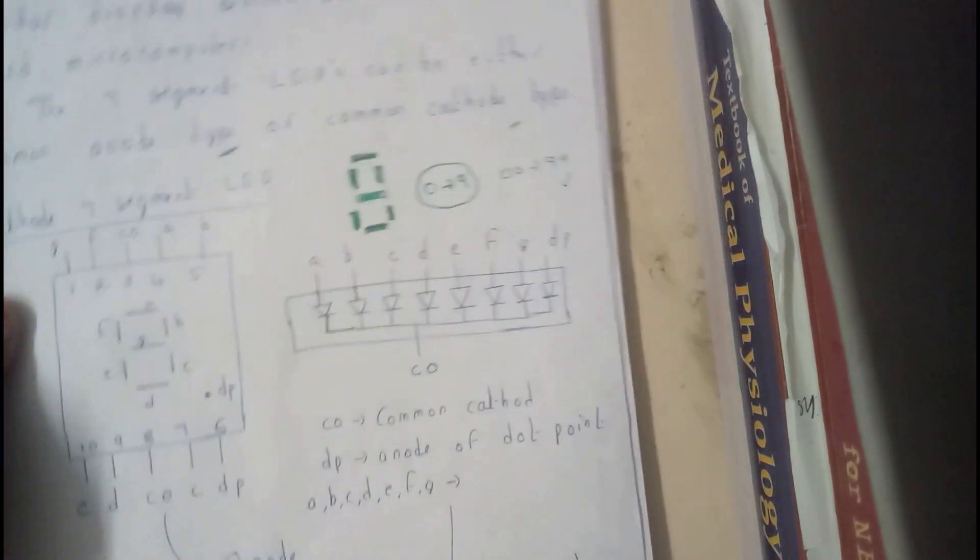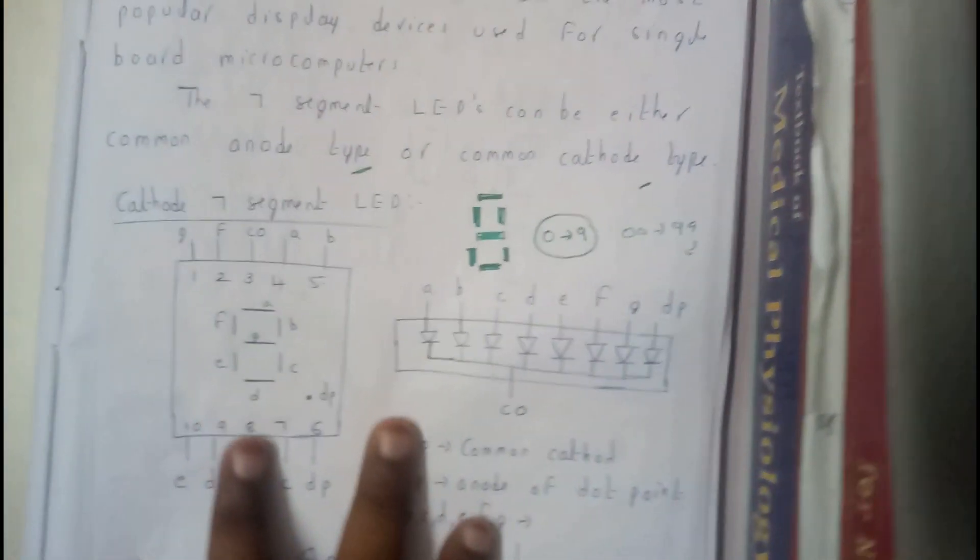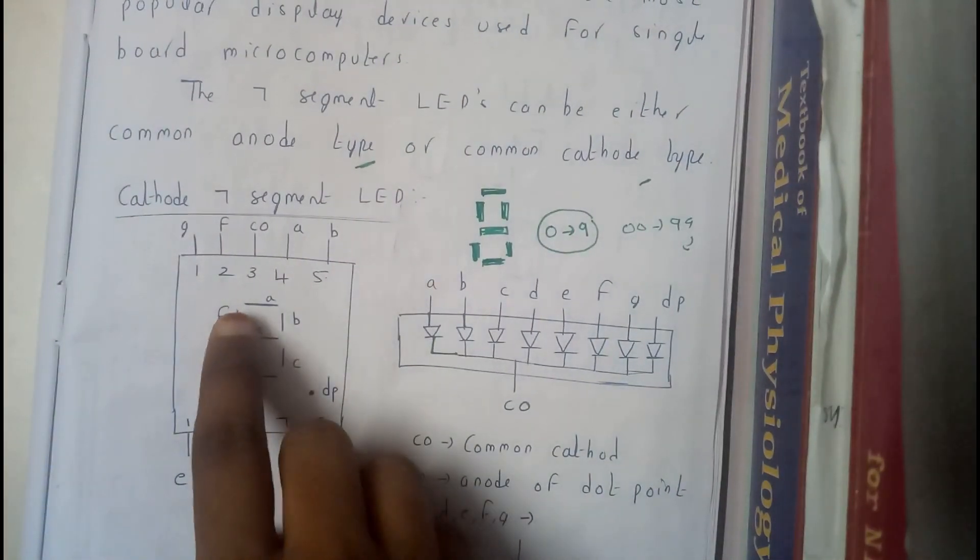Yes, this symbol can represent from zero to nine on this LED. If we want to represent zero, only the outer layer. If you want to represent one, only this end layer or this end layer. So this end layer will be the best option. Like that we can denote them.